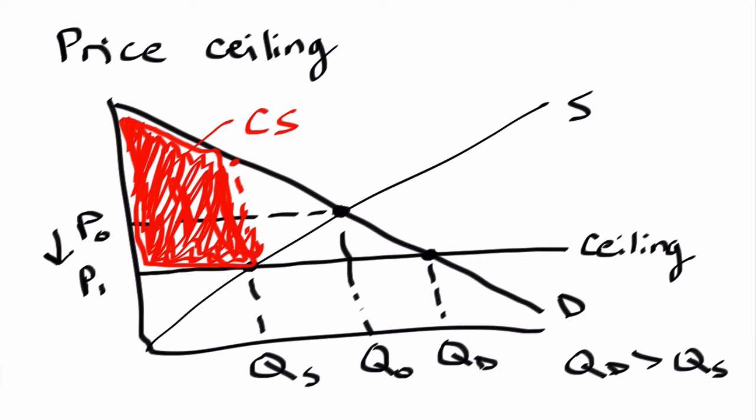And then if you look at the producer surplus, what's happening is the producer surplus has gone down as a result of this price ceiling, because originally the producer surplus was this large right triangle here from P0 to Q0 to the axis of 0. But now we see that the producer surplus has reduced to P1 QS and then that original 0 at the axis. So this is your new producer surplus.